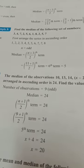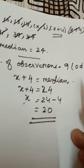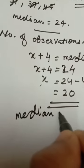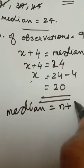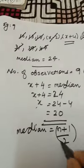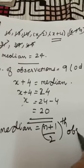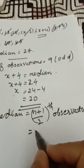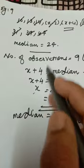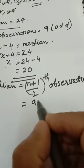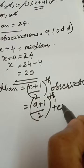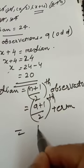Here, formula method if you want. The number of observations is odd. What is the formula? Median equals n plus 1 by 2th observation. n, what is n? n is number of observations, is 9. 9 plus 1 by 2th term observation.